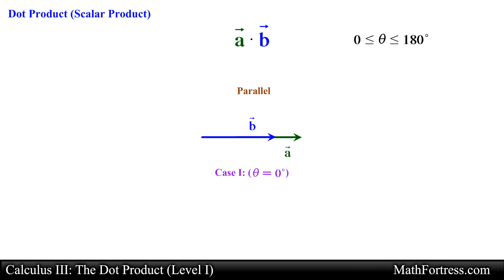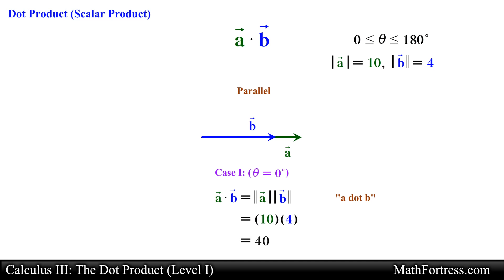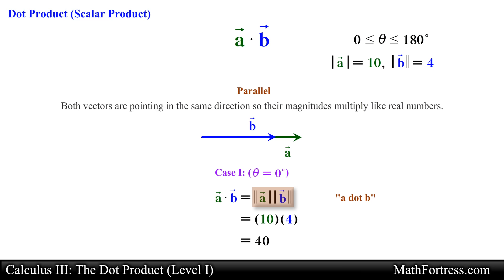Under this condition the product of two vectors behaves similarly to the way we multiply real numbers. For example, if vector a has a magnitude of 10 and vector b has a magnitude of 4, then the scalar product — pronounced as a dot b — would be equal to 10 times 4, which simplifies to 40. We were able to multiply the magnitudes because both vectors were pointing in the same direction. Unfortunately, vectors are rarely lined up pointing in the same direction.